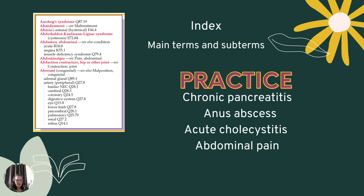Let's talk about the index. The index is found at the beginning of your book, and this is where you look up your main terms and subterms. For example, with chronic pancreatitis, pancreatitis is your main term — chronic describes the type of pancreatitis. In your index, you go to the P's, look up pancreatitis, and then follow down until you find chronic. We're not putting that into action today; we're just talking about how you look up codes.